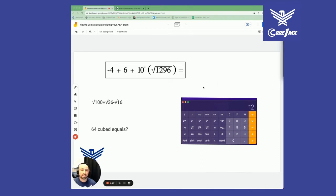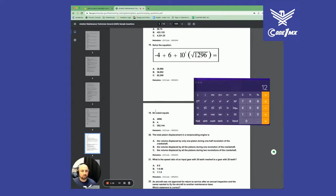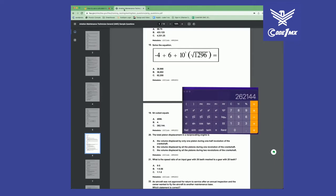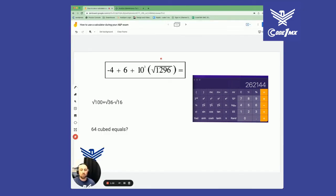So let's do 64 cubed, what does it equal? 64 cubed equals, let me clear this out, 64 cubed, there's 262,144 and that's the answer. So you're going to have it here, 262,144 and that's your answer right there.